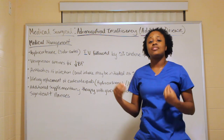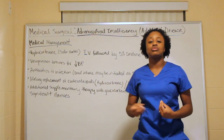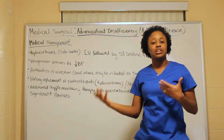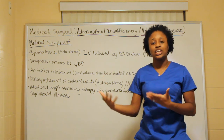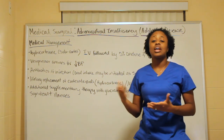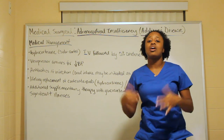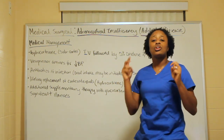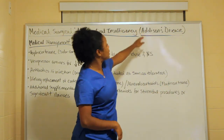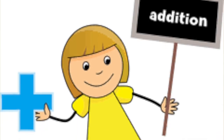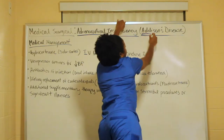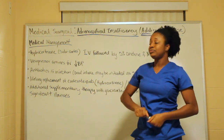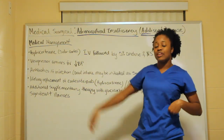For medical management of Addison's disease, remember that the patient lacks these hormones that regulate day-to-day function — cortisol for stress, sex hormones like estrogen and androgens. With Addison's, we need to 'add' what's missing. Treatment includes hydrocortisone given IV, followed by 5% dextrose in normal saline to address the low glucose and low sodium levels.